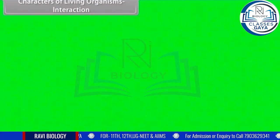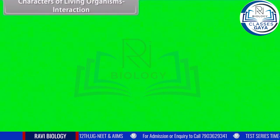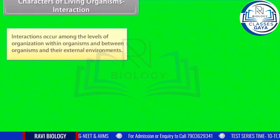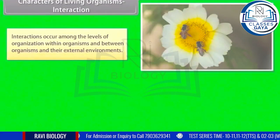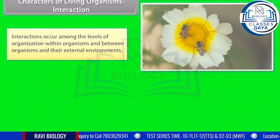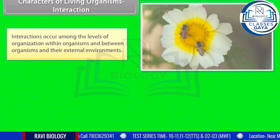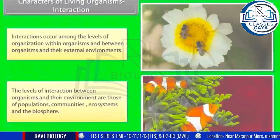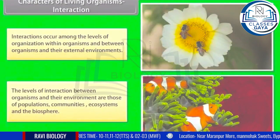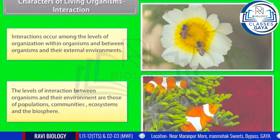Characters of living organisms — Interaction: interactions occur among the levels of organization within organisms and between organisms and their external environments. The levels of interaction between organisms and their environment include those of populations, communities, ecosystems, and the biosphere.